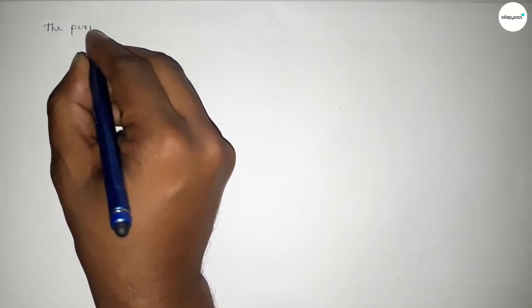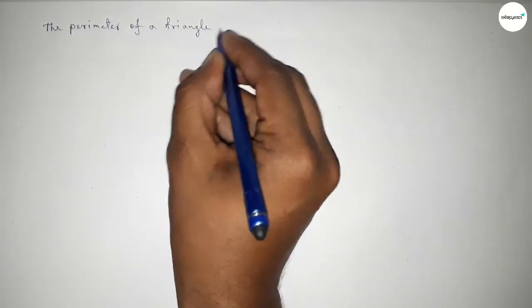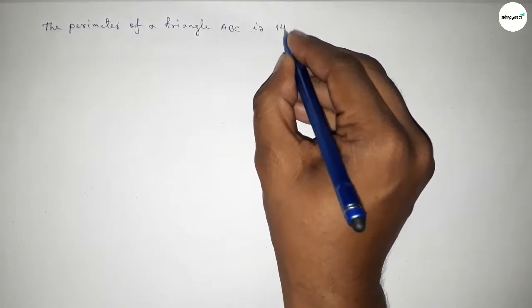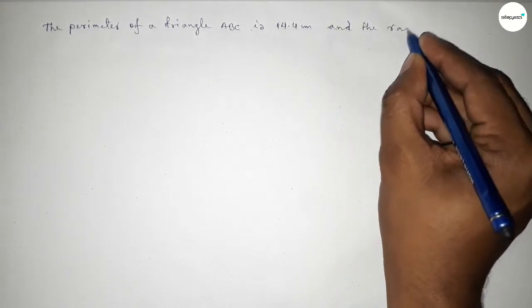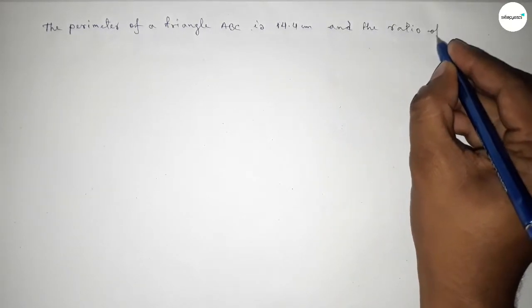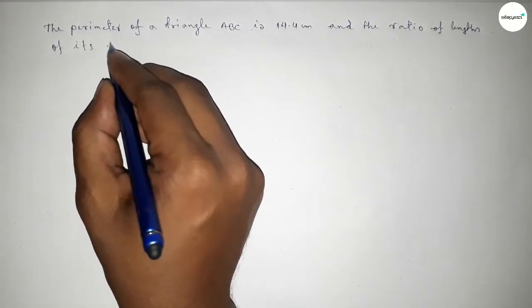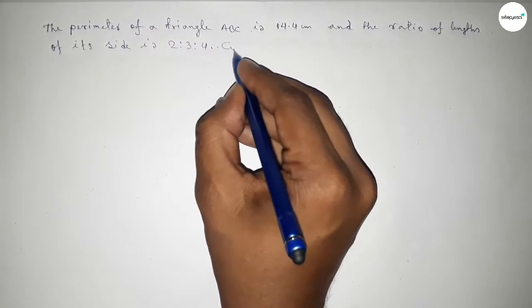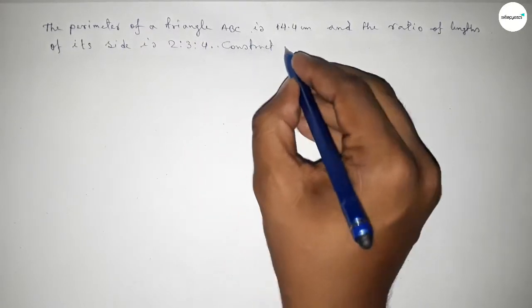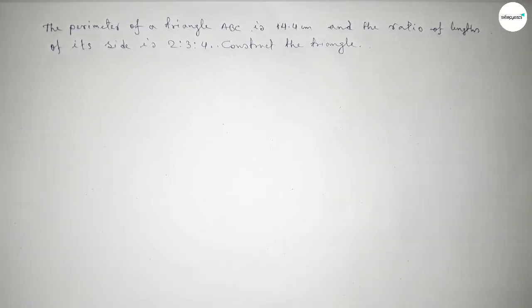Hi everyone, welcome to SI Share Classes. Today in this video we have to construct a triangle. The perimeter of triangle ABC is 14.4 centimeters and the ratio of lengths of the three sides is 2:3:4. We will be constructing this triangle using a compass in an easy way. Let's start the video.